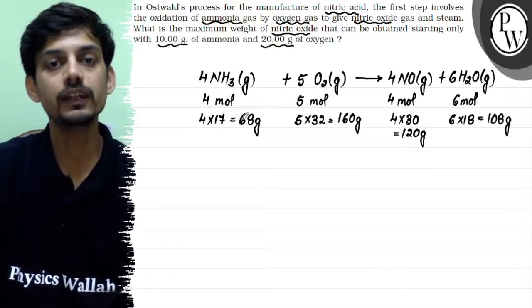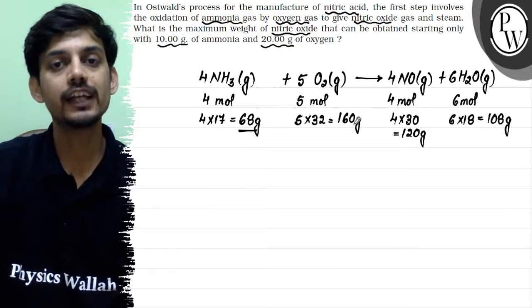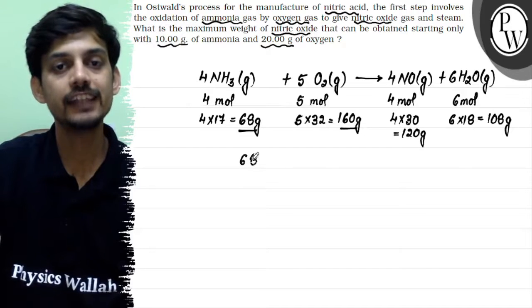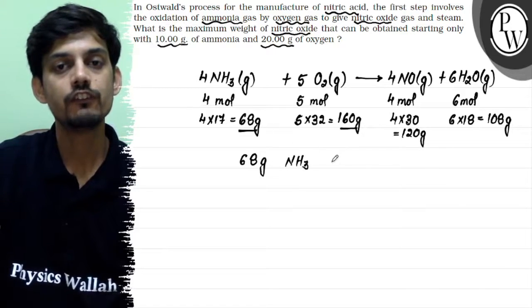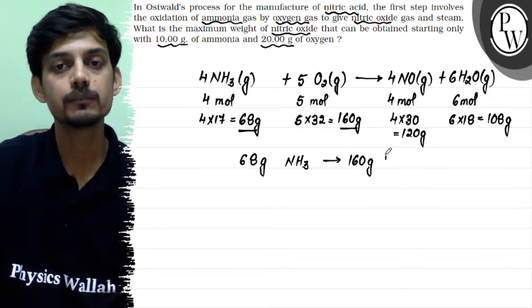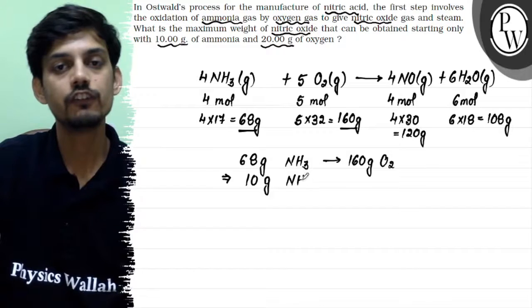So we can see from here that 68 grams of ammonia will be oxidized by 160 grams of oxygen. So for 68 grams of ammonia we will be needing 160 grams of oxygen gas. So from here we can use the unitary method.